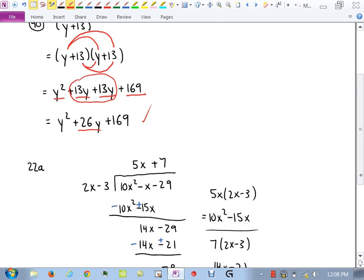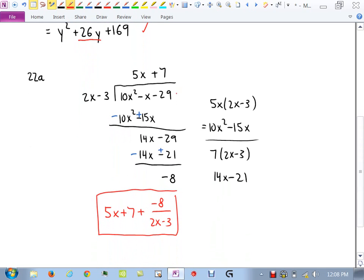22a is long division. So we take the numerator, make sure it's in descending order, make sure there's no gaps. We put our denominator on the outside. And now we ask ourselves, what do we multiply 2x by to get 10x squared? Well, we need to turn 2 into a 10, so we multiply by 5. We need to turn x into x squared, so we also need an x. Now I take that 5x and I multiply this whole thing by 5x, which I did over here. Distribute that through. You get 10x squared minus 15x.